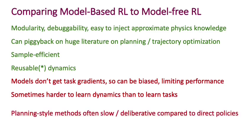Finally, there's also a problem with some model-based RL approaches that use purely planning for selecting actions — planning can often be quite slow or deliberative compared to direct policies like those learned with Q-learning or direct policy search.